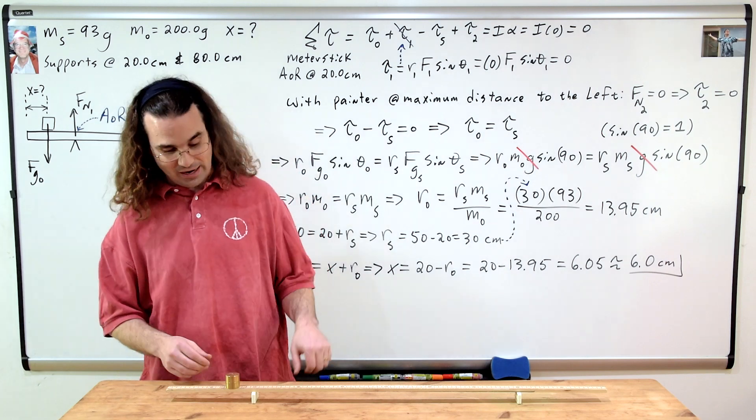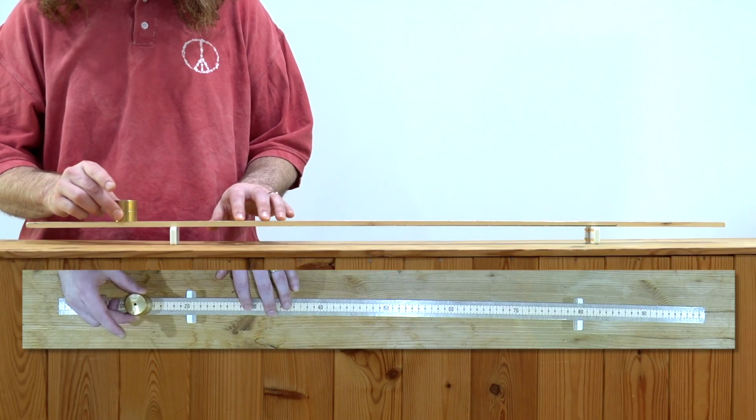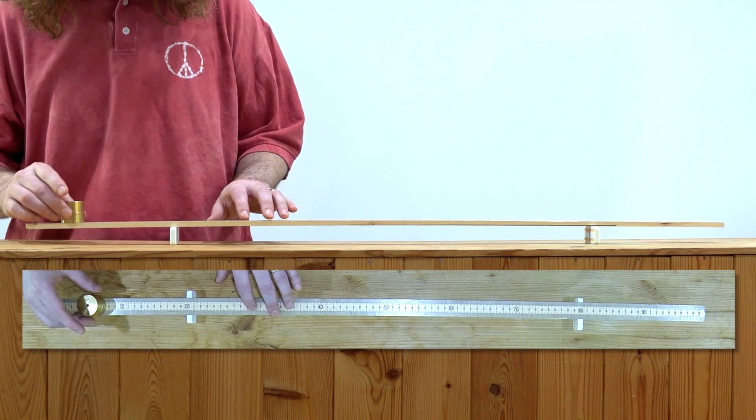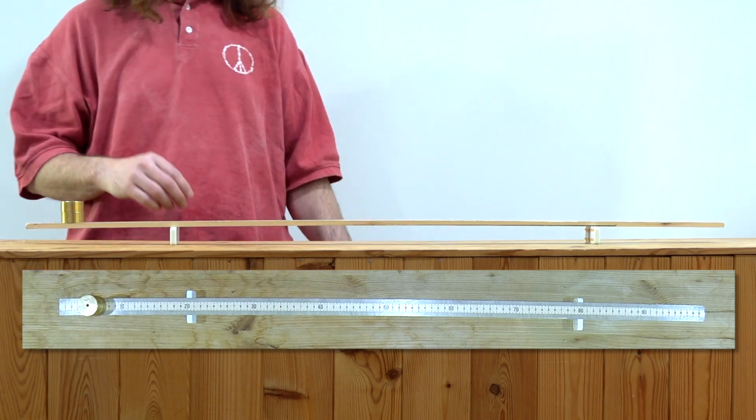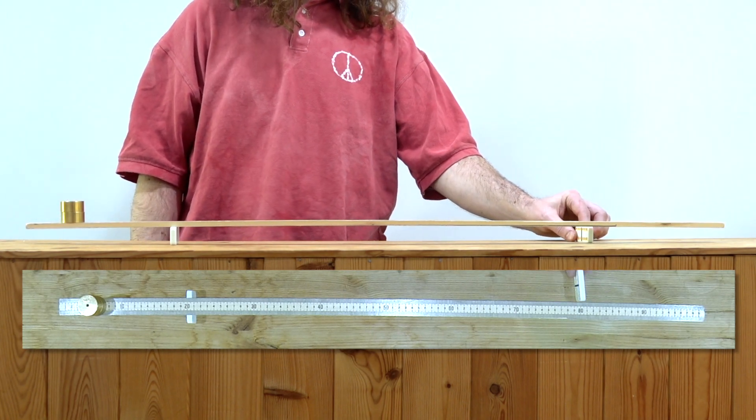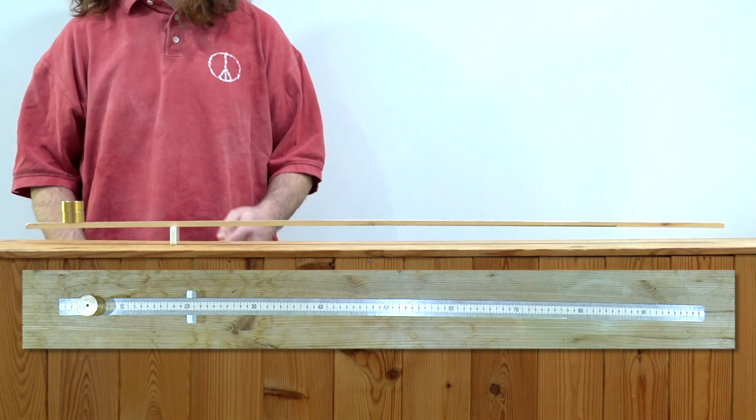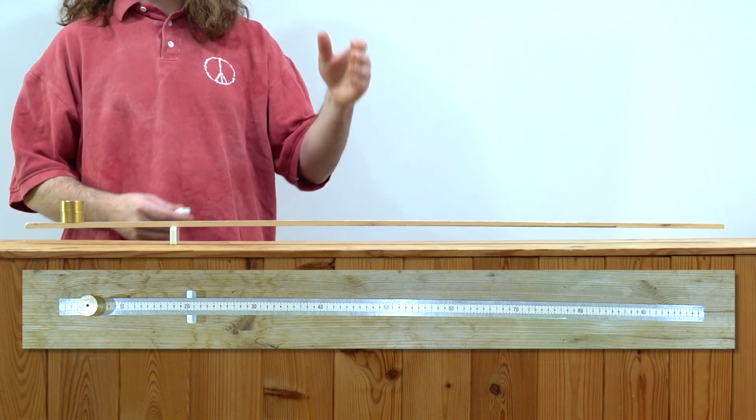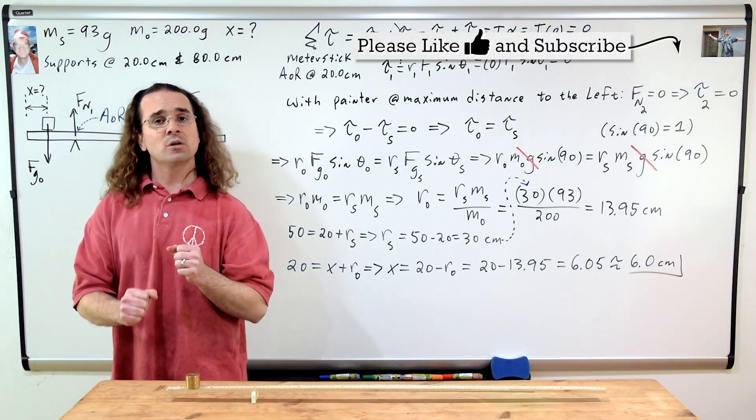And of course, we need to test our answer, so we're going to bring the painter. The painter is 6.0 centimeters from the left end and you can see it is now balanced. In fact, I can remove this domino because this domino was not providing any support. The force normal from that domino was zero. And as you can see, the physics works.